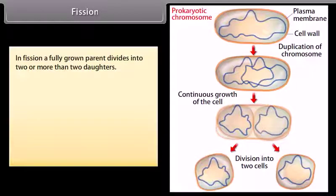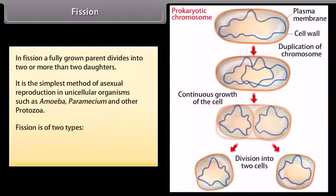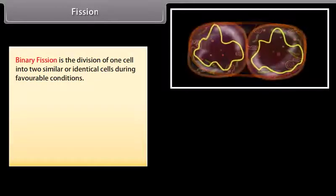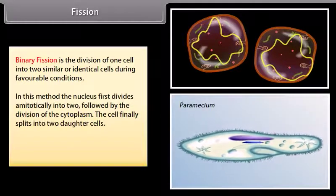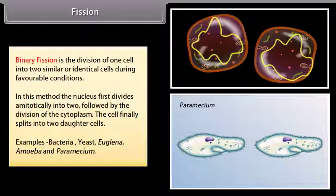Fission: In fission, a fully grown parent divides into two or more daughter cells. It is the simplest method of asexual reproduction in unicellular organisms such as amoeba, paramecium, and other protozoa. Fission is of two types: binary fission and multiple fission. Binary fission is the division of one cell into two similar or identical cells during favorable conditions. The nucleus first divides mitotically into two, followed by the division of the cytoplasm, and the cell finally splits into two daughter cells. Examples include bacteria, yeast, Euglena, amoeba, and paramecium.